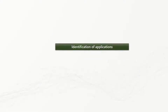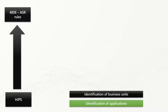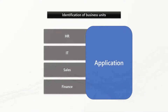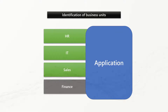Once you have the inventory of all applications, the next step is to target business units. For example, assume an application is used by HR, IT, Sales, and Finance. If that application stops working due to ASR rules adoption, the team with the greatest business impact would be Finance. In that case, you may want to choose IT, Sales, and HR for initial deployment, and once everything is validated, roll it out org-wide.